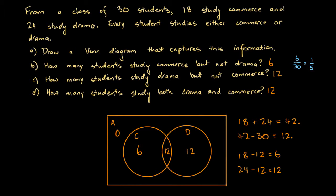What about drama but not commerce? Suppose a student is drawn at random — what is the probability that the student studies drama but not commerce? Again, we'd have 30 as our denominator and our numerator would be 12. There are 30 possible equally likely outcomes and 12 of them meet this condition. So the probability would be 12 over 30. We have a common factor of 6, so this is going to be 2 over 5. Suppose a student is chosen at random — what is the probability that that student studies both drama and commerce? It's going to be 12 over 30 again, which is 2 over 5.